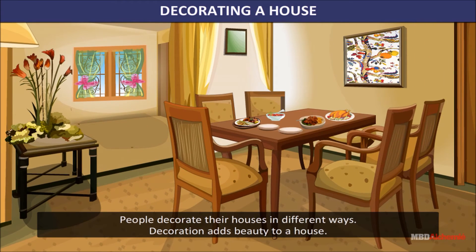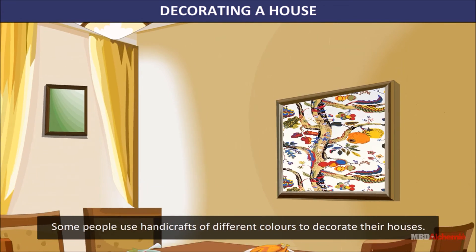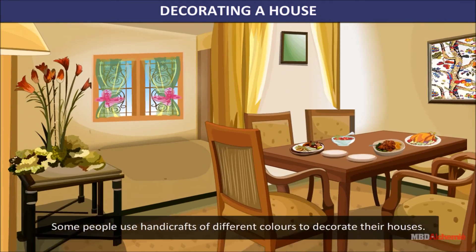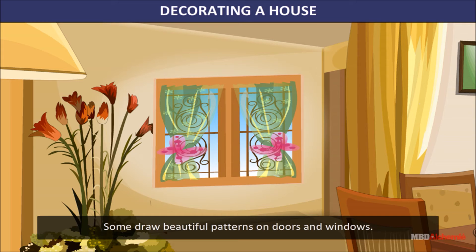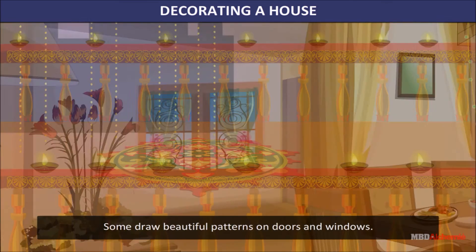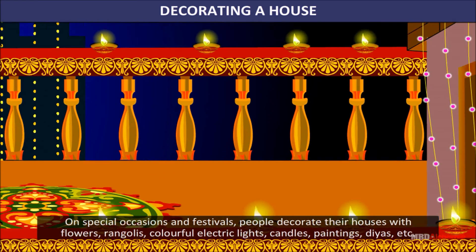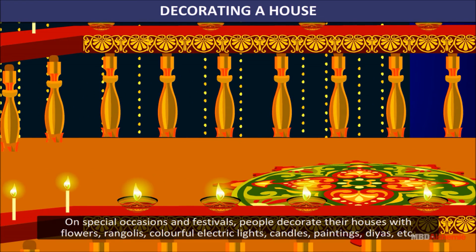Decorating a house: People decorate their houses in different ways. Decoration adds beauty to a house. Some people use handicrafts of different colors to decorate their houses. Some draw beautiful patterns on doors and windows. On special occasions and festivals, people decorate their houses with flowers, rangolis, colorful electric lights, candles, paintings, diyas, etc.